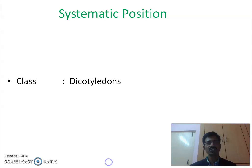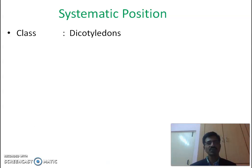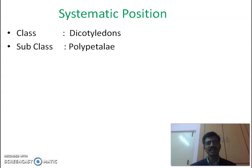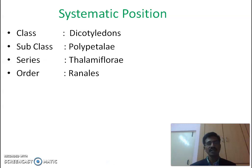Now we come to systematic position. This family belongs to class Dicotyledons — it has a taproot system and also reticulate venation, which are the main identification characters of the Dicotyledons. It belongs to subclass Polypetalae, where petals are free and biclamydeous flowers are observed. It also belongs to series Thalamiflorae, where we observe a conical-shaped thalamus and a superior ovary.